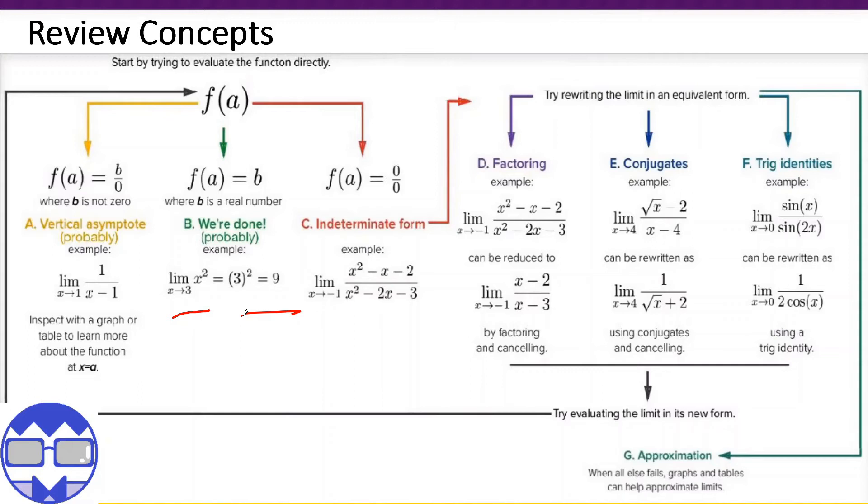Next, we have this scenario here, b over 0. So take note that b is not 0. So we create or we have a vertical asymptote. So for example, 1 over x minus 1 as x approaches 1. So if we try to substitute 1, this will give us 1 over 1 minus 1, which is 1 over 0.